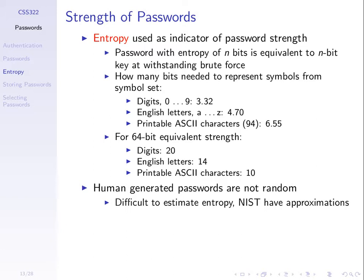20 times 3.32 is about 64 bits. So this is just one example saying: if you choose a 64-bit random value, it's about the same as 20 random digits, or 14 English lowercase characters, or 10 printable characters from those 94 characters — because they all have an entropy of about 64. So we can say a password of 20 digits is about the same strength as a password of 14 English lowercase characters. We can use entropy to measure and compare, assuming they are randomly chosen.